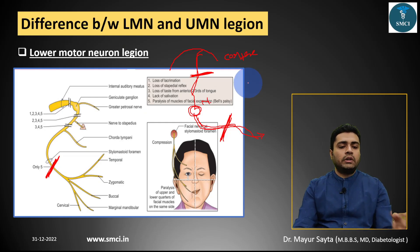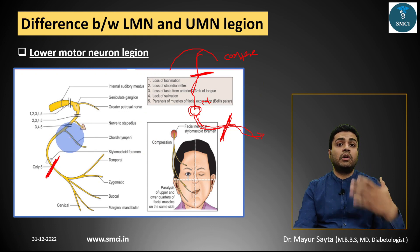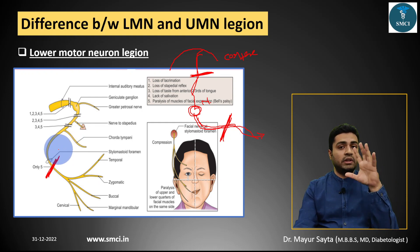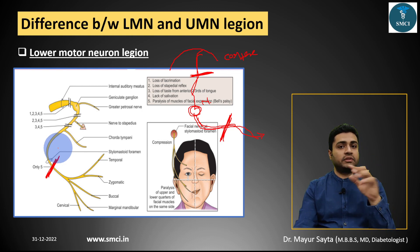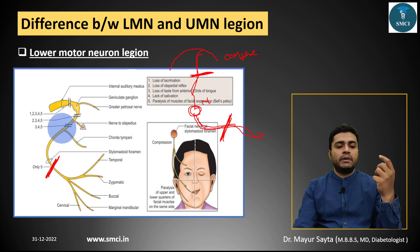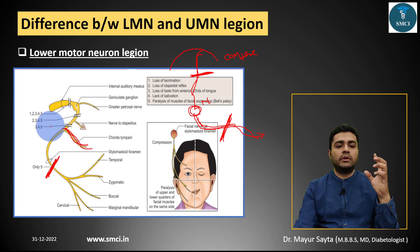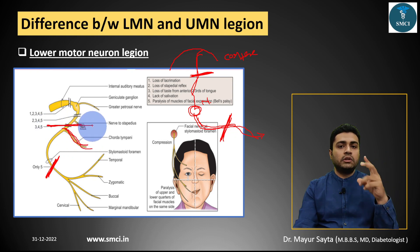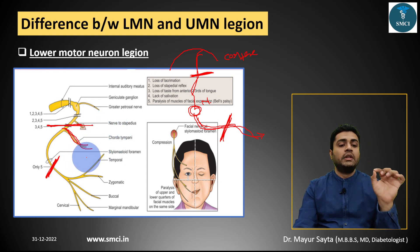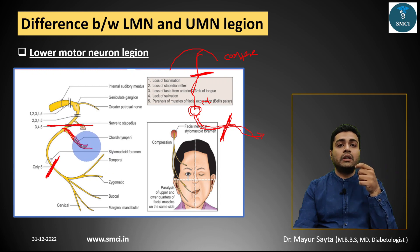Clinical features depend on the level of damage. In this case, only facial muscle features are present, but different features occur at different levels. The chorda tympani nerve comes off at a specific level. If the lesion is above the chorda tympani, you write all the facial muscle features of Bell's palsy, plus loss of taste sensation on the anterior two-thirds of the tongue.